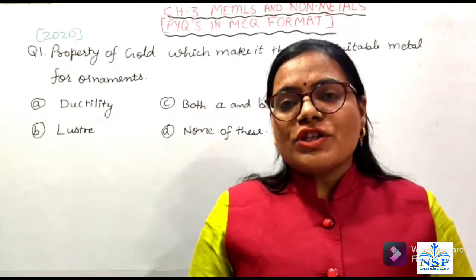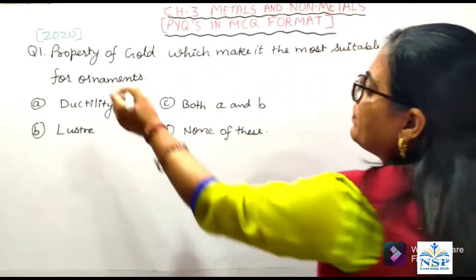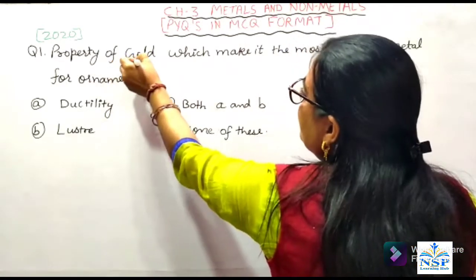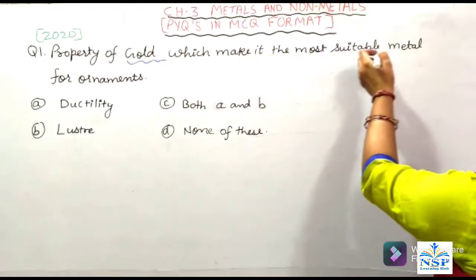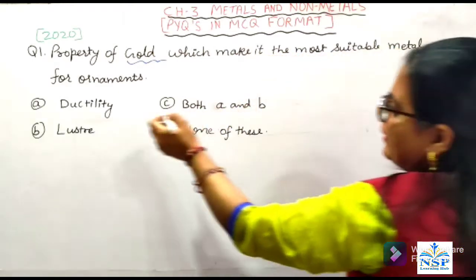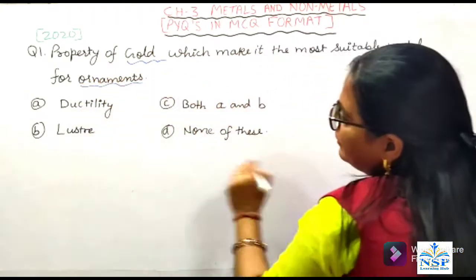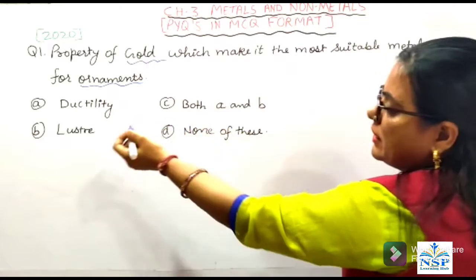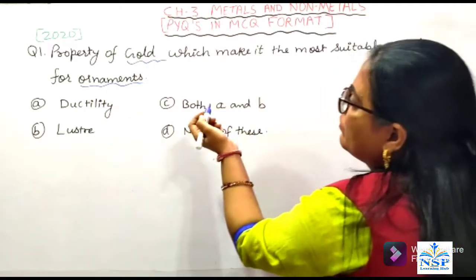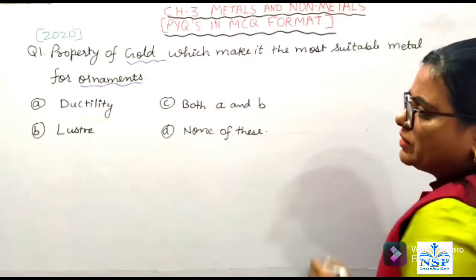Students, our question number 1 is: the property of gold which makes it more suitable metal for ornaments. Options: (A) Ductility, (B) Luster, (C) Both A and B, (D) None of these.